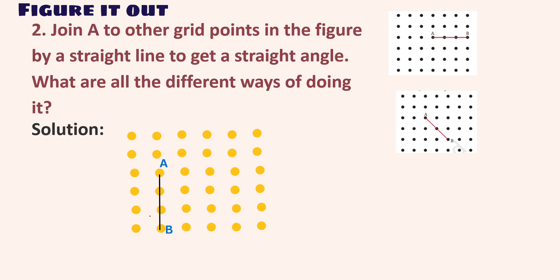Question 2: Join A to other grid points in the figure by a straight line to get a straight angle. What are the different ways of doing it? As shown in the picture, A, B, I, J form a straight angle. Similarly in another orientation we can draw it in another way. The straight angle drawn here is 180 degrees.